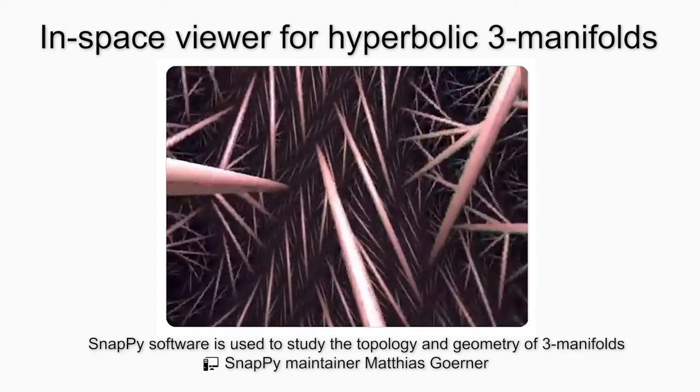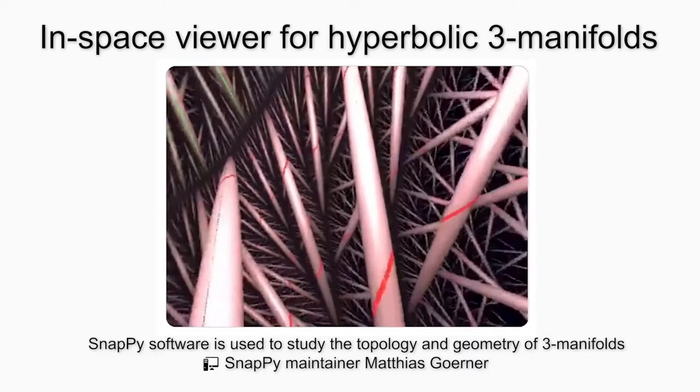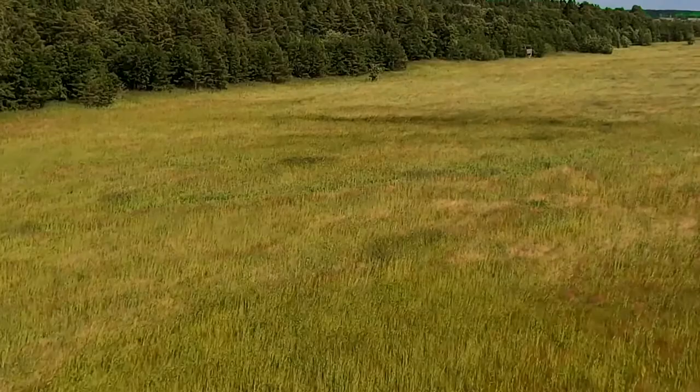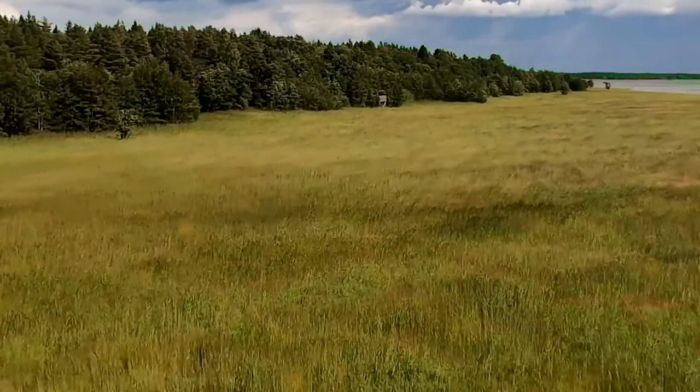Purcell works on the interplay of hyperbolic geometry and three-dimensional spaces called manifolds. A three-manifold is a generalization of a surface. If you are standing on a surface, you have two dimensions of directions in which to walk — say the surface of the earth, you can go forward and backward, or left and right. In three dimensions, you can add up and down, so every point has three dimensions of direction in which you can go.